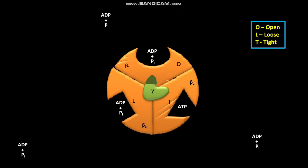The H+ ion, or proton flux, through the F0 portion of the ATP synthase causes a 120 degree rotation of the asymmetric gamma subunit. All three beta subunits — beta1, beta2, and beta3 — of F1 are fixed relative to the gamma subunit, meaning beta1, beta2, and beta3 subunits of F1 do not rotate during the entire cycle of ATP synthesis. The 120 degree rotation of the gamma subunit pushes differently against the beta1, beta2, and beta3 subunits.